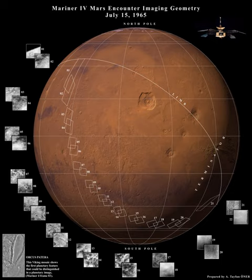Two Mars flyby attempts were made in 1960 under Mars 1M. The third attempt at a Mars flyby was the Soviet Mars 2MV-4 No. 1, also called Mars 1962A or Sputnik 22, which launched in 1962 as part of the Mars Program, but it was destroyed in low Earth orbit due to rocket failure. Mars 1 also launched in 1962 but communications failed before it reached Mars. Mars 4 achieved a flyby in 1974 and detected a nightside ionosphere.